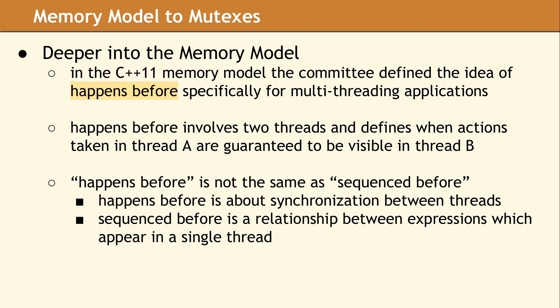The C++ Memory Model defines a lot of different terms. The one we need for this discussion is called happens-before. This sounds pretty simple, however it is actually more complex than you might expect. The idea of happens-before is about actions occurring in two different threads. We want to know: does this operation in thread A happen before that operation in thread B? The question of happens-before is not the same thing as sequenced-before.